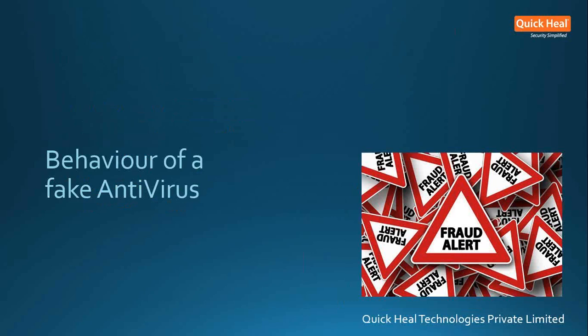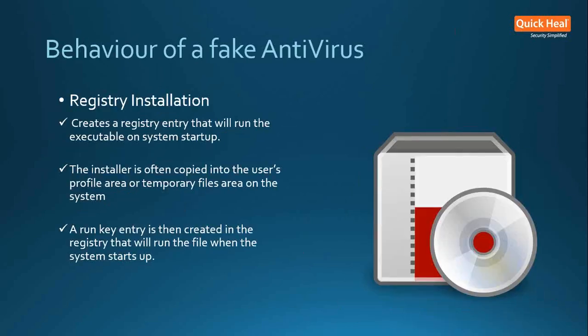Let's look at how fake antivirus software behaves. First is registry installation — the fake antivirus copies the installer to another location on the system and creates a registry entry that will run the executable file on startup. The installer is often copied to the user's profile area such as Documents & Settings, Local Settings, Application Data, or temporary file areas with a randomly generated file name. A run key entry is then created in the registry so the file runs when the system starts up.